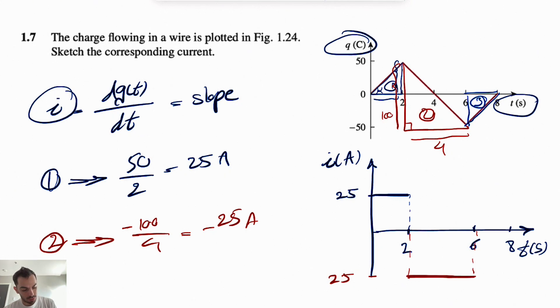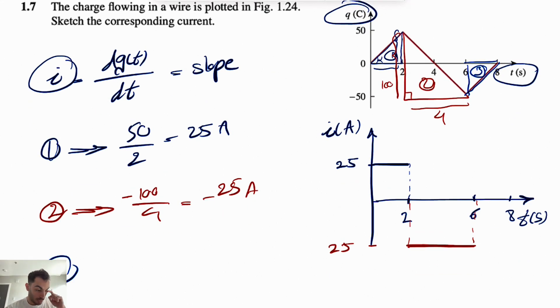And the last region, it's going to be the slope of this right triangle here. Again, 50 over 2, and we can see we are going up. So the slope is positive, 50 divided by 2. Again, this is going to be positive 25 amps.